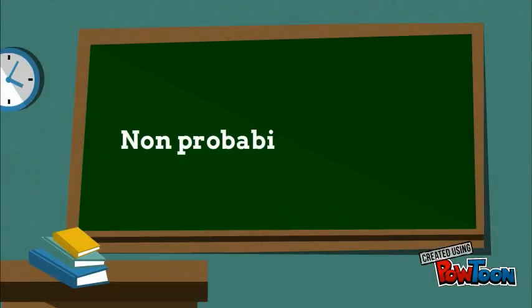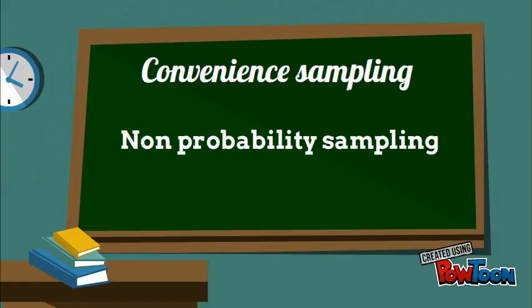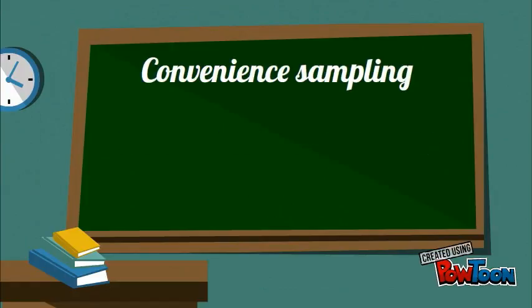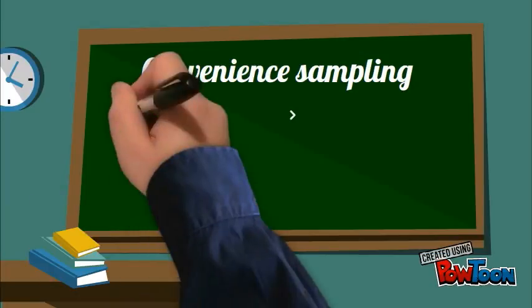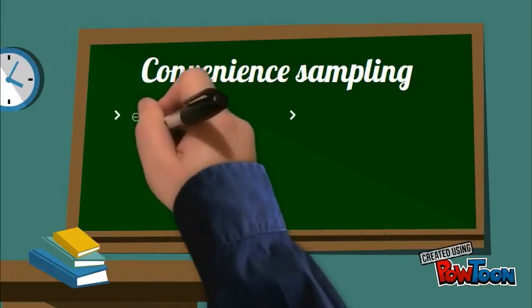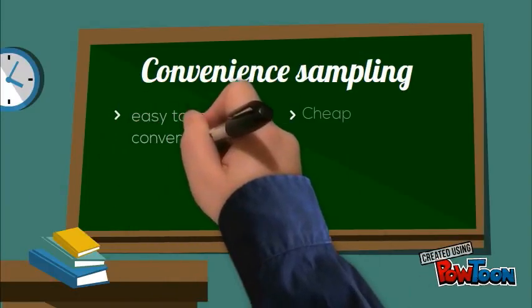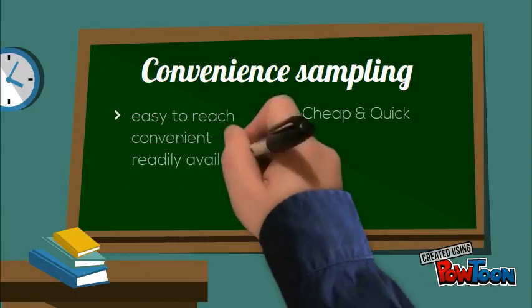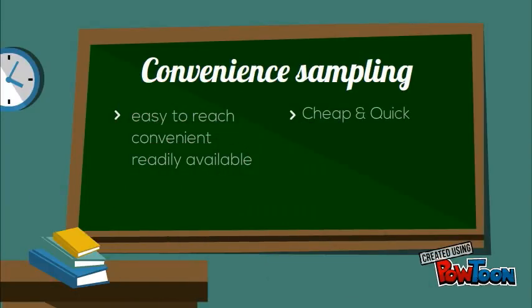Let us further discuss non-probability sampling. Convenience sampling allows researchers to get any cases in any method that is convenient for them. It is easy to reach, convenient, readily available, cheap, and quick. However, it is not recommended if you want to create an accurate sample to represent the population.